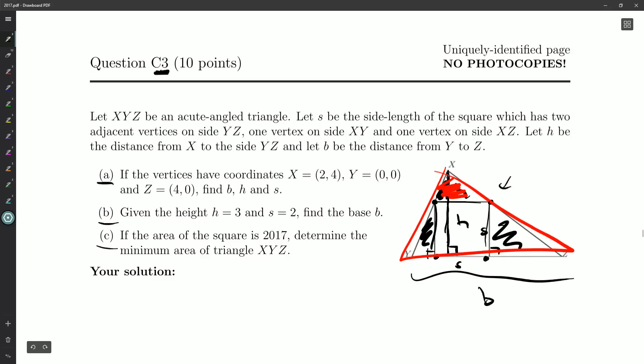Part b: Given the height h = 3 and s = 2, find base b. So it looks like in the first one b and h will not be hard to find. We need to find s. But it looks like we would probably find a relationship between just h, s, and b.